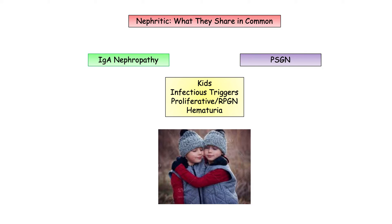Let's start with what IgA nephropathy and post-streptococcal have in common. Both disorders are more common in children and both are associated with an infectious trigger. In so far as pathology, both can demonstrate a proliferative response on light microscopy, but rarely progress to rapidly progressive or crescentic glomerulonephritis. They both share the presence of hematuria, which might be described as dark or cola-colored urine and/or the presence of RBC casts.